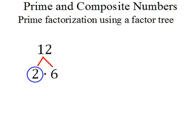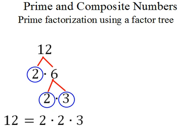Now we're done with 2, so next we write the factors of 6. 2 goes into 6 three times. Notice that 2 and 3 are both prime numbers, so I circle them. At this point, there's nothing else to factor. From the circled primes, the prime factors of 12 are 2, 2, and 3.